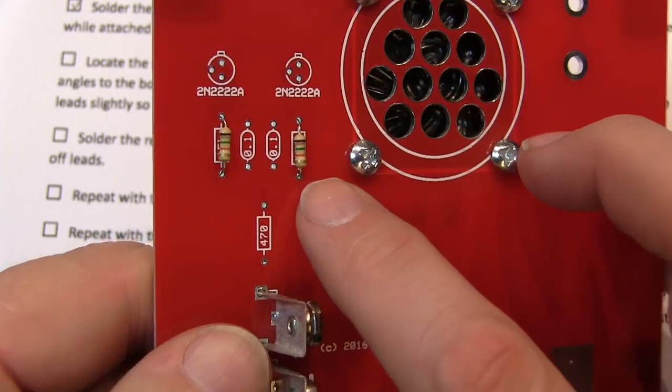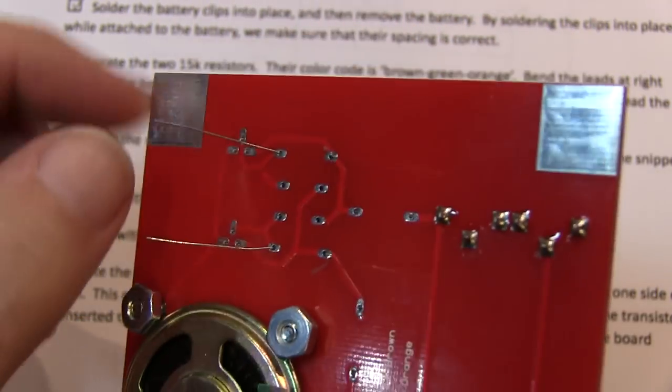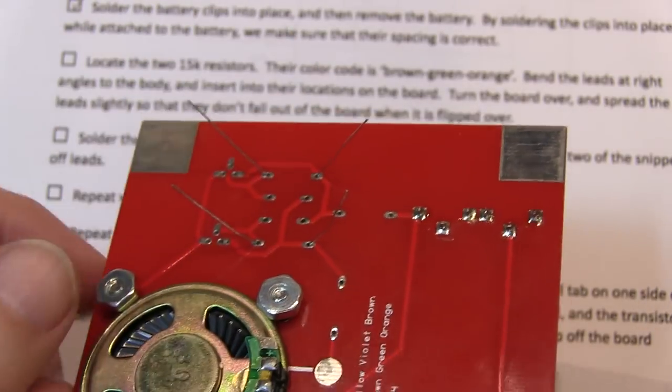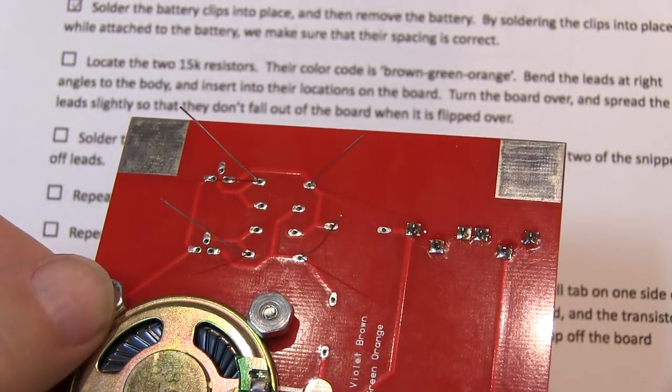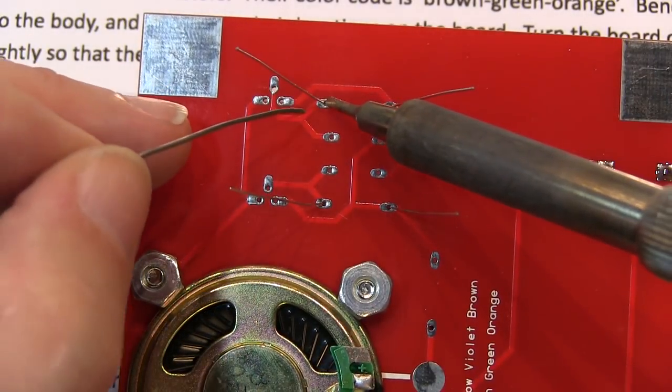When they're properly inserted in the board, they should sit nice and flush. And then with your finger on the part, you could turn it over and slightly spread the leads out on the bottom so that the part doesn't fall out when you turn the board over for soldering. And then we'll solder these four leads just like we did for the battery clips.